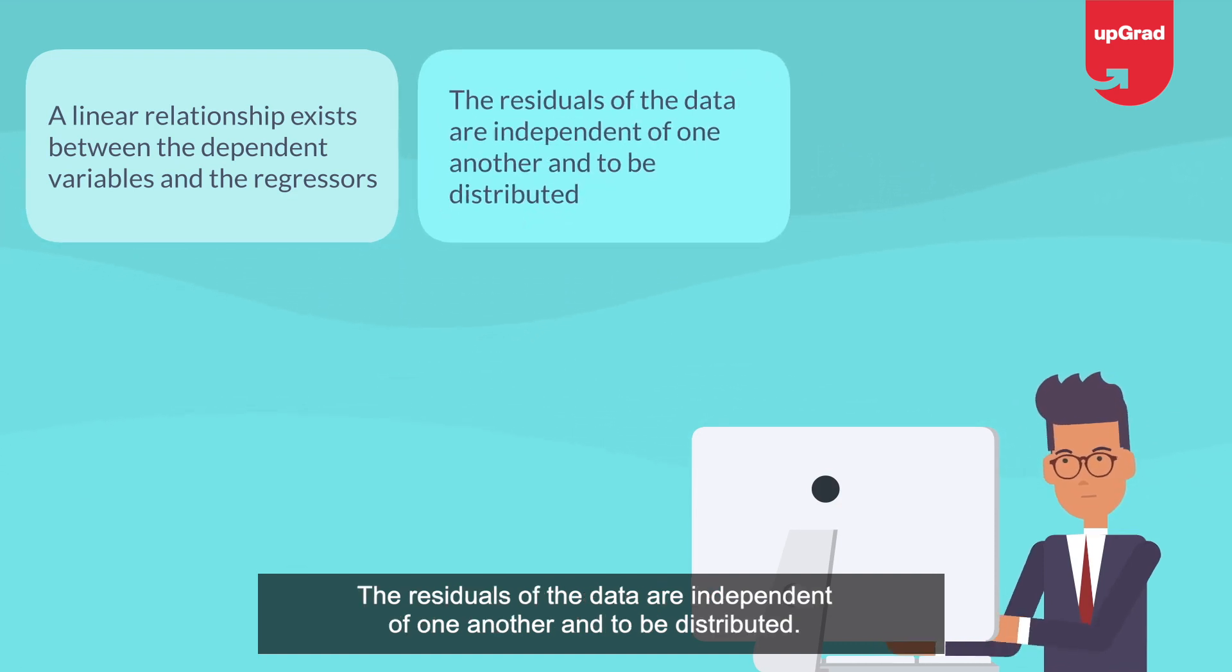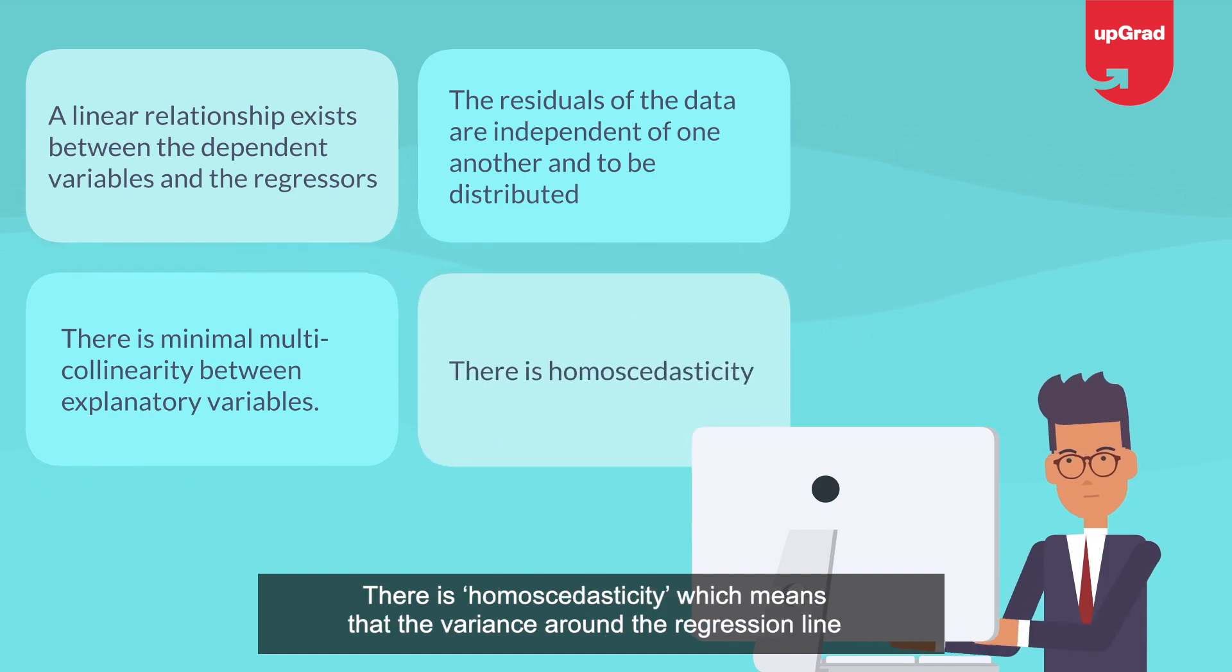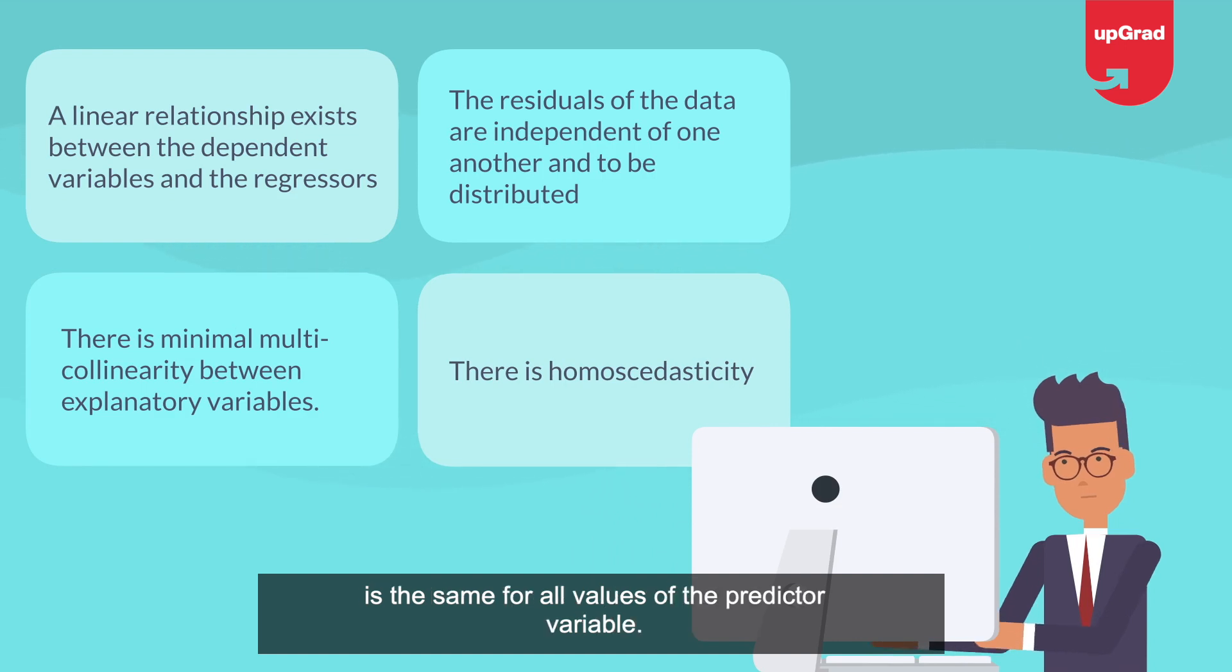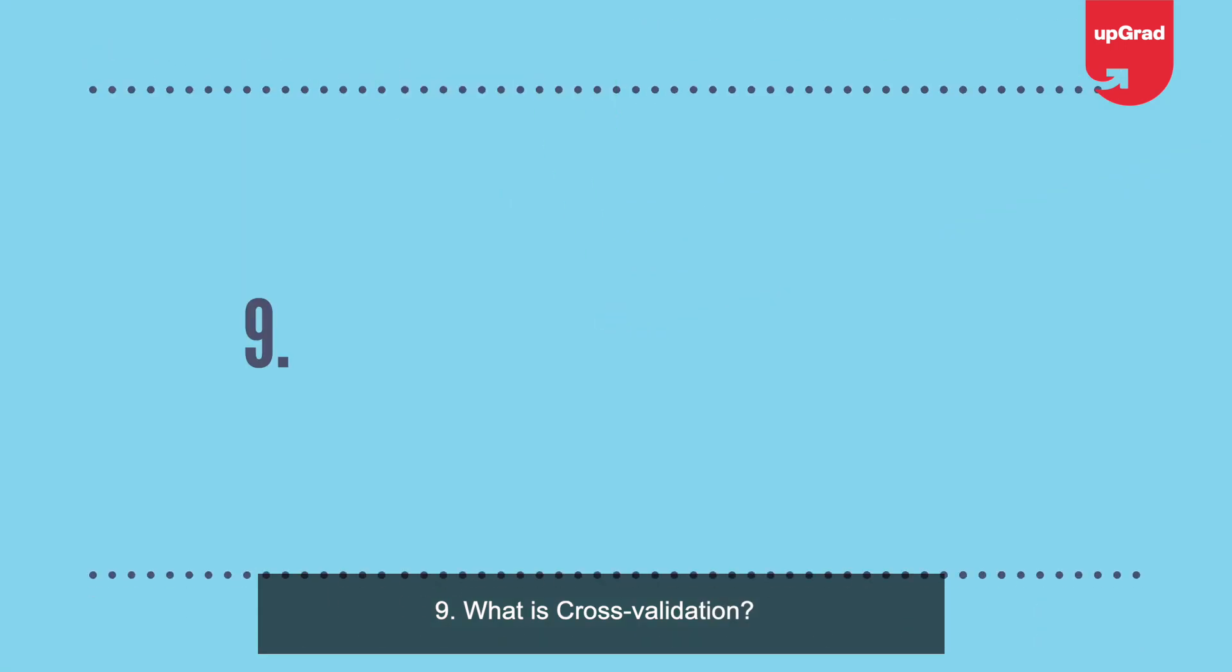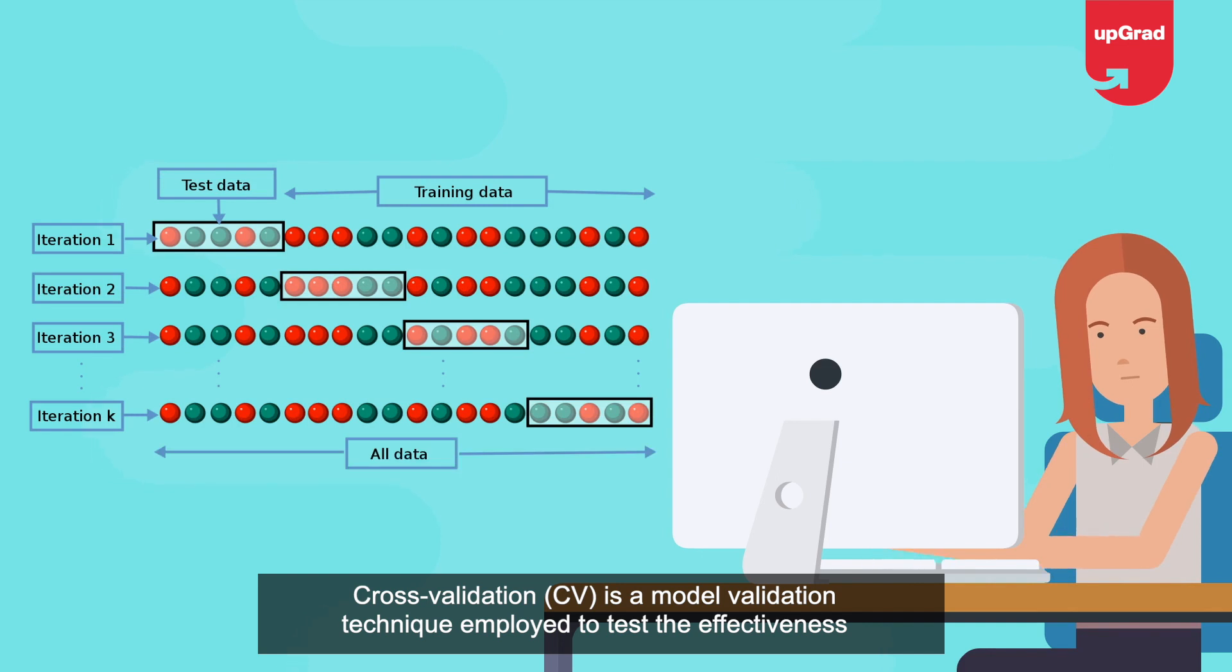A linear relationship exists between the dependent variables and the regressors, so the data model will be in sync with the data. The residuals are independent of one another and normally distributed. There is minimal multicollinearity between explanatory variables. There is homoscedasticity, which means the variance around the regression line is the same for all variables of the predictive variable.